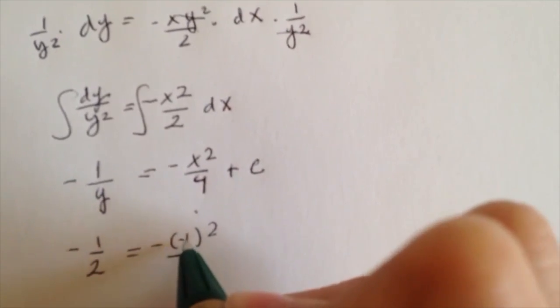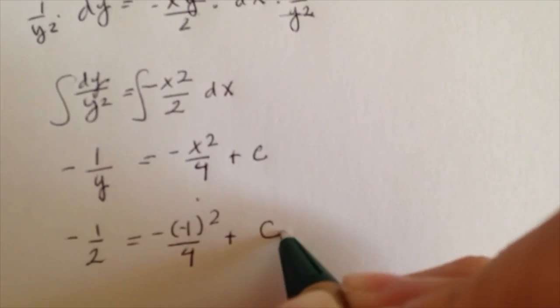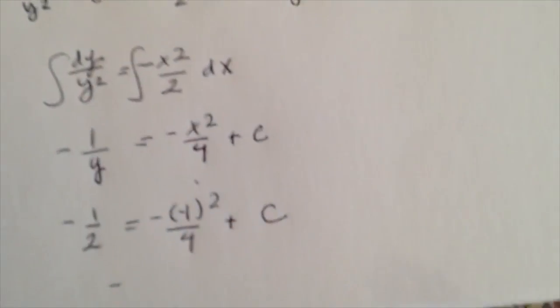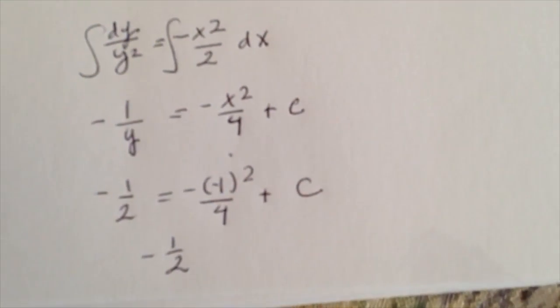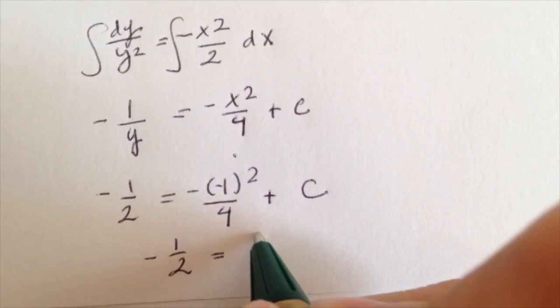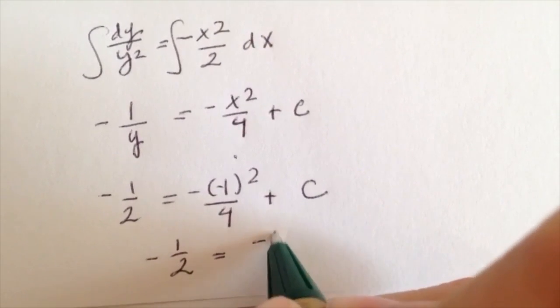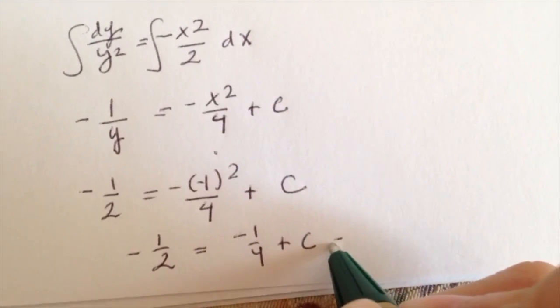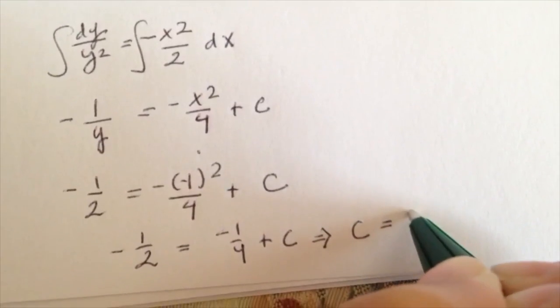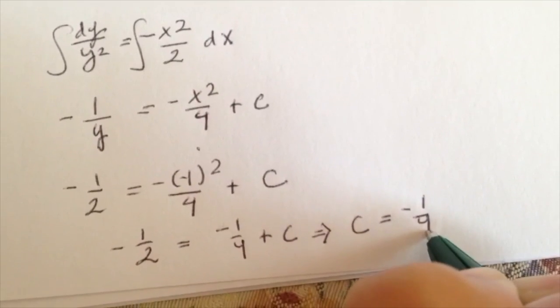Don't forget you're negative. C equaling negative 1 over 4.